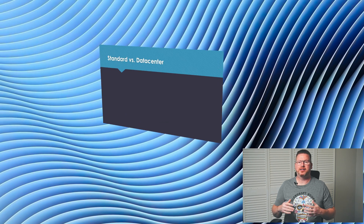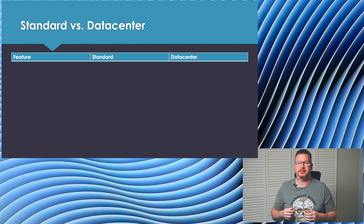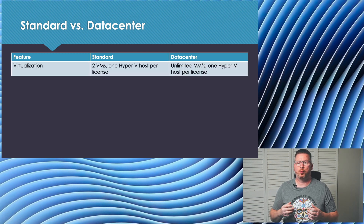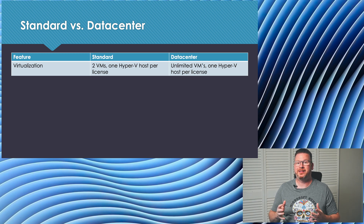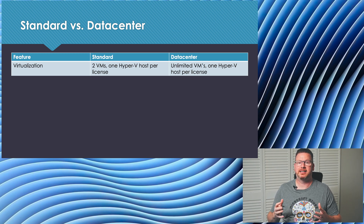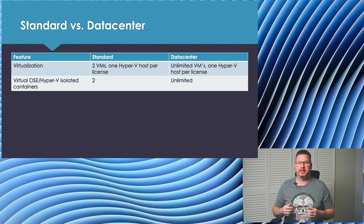Let's move on to Windows Server Standard and Datacenter. There are a few differences to be aware of with these two editions. With Standard, we can run one Hyper-V host with two VMs per license. With Datacenter, we can run one Hyper-V host and unlimited VMs. Standard is limited to two isolated containers while Datacenter is unlimited.